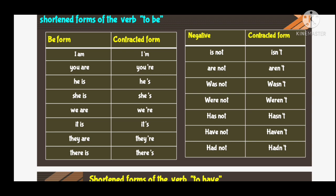The contracted form or short form of 'it is' is 'it's'. 'They are' — contracted form is 'they're'. 'There is' — the contracted form is 'there's', there apostrophe s.